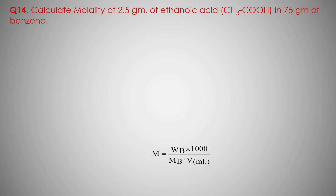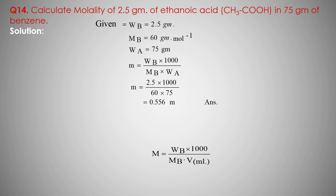Question number 14: Calculate the molality of 2.5 gram of ethanoic acid (CH3COOH) in 75 gram of benzene. Ethanoic acid is the solute. Mass of solute Wb equals 2.5 gram.